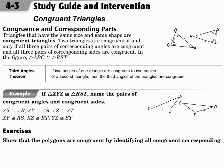Triangles that have the same size and same shape are congruent triangles. All three pairs of angles are congruent and all three pairs of sides are congruent, and those are called corresponding parts.